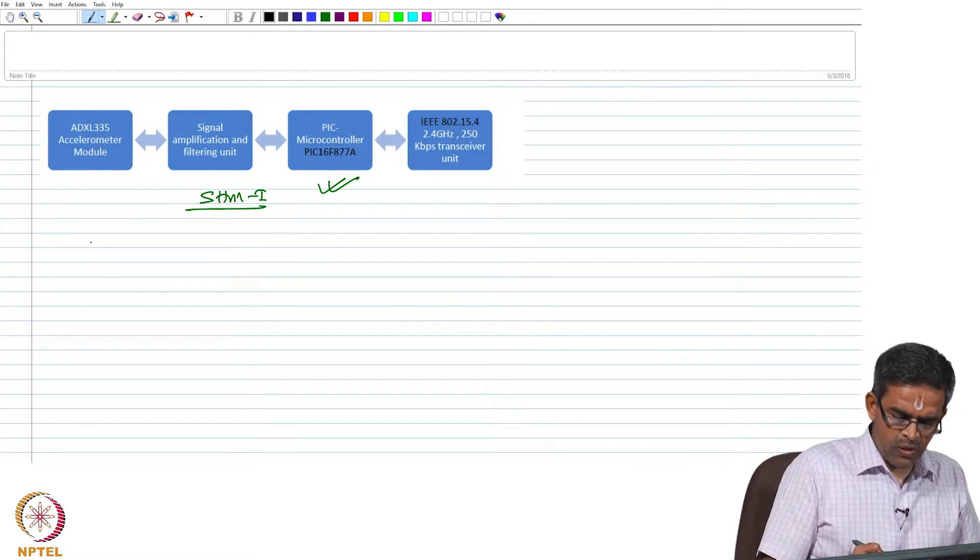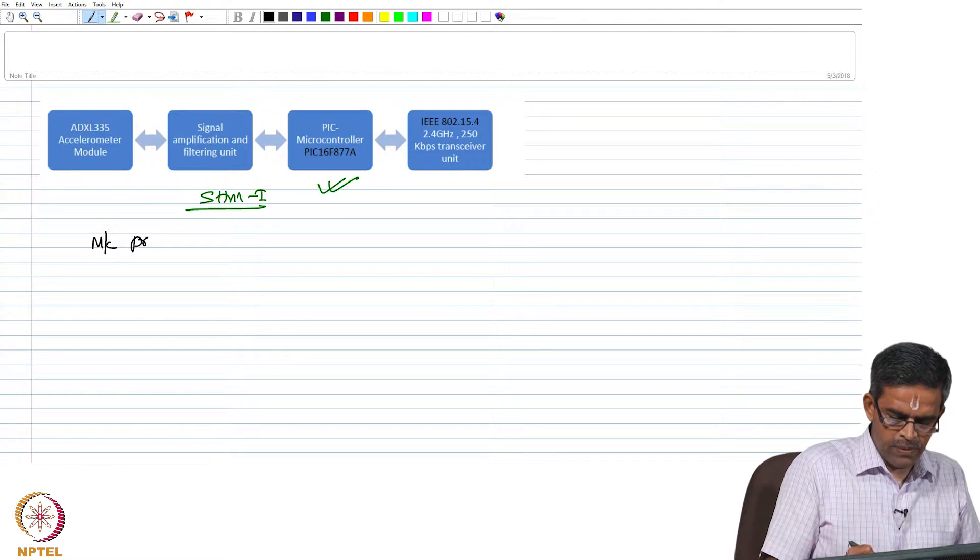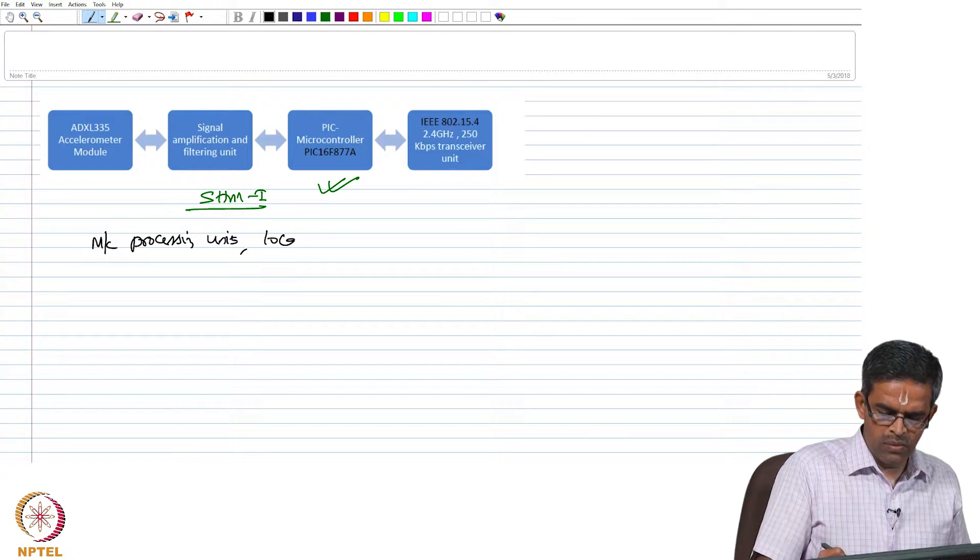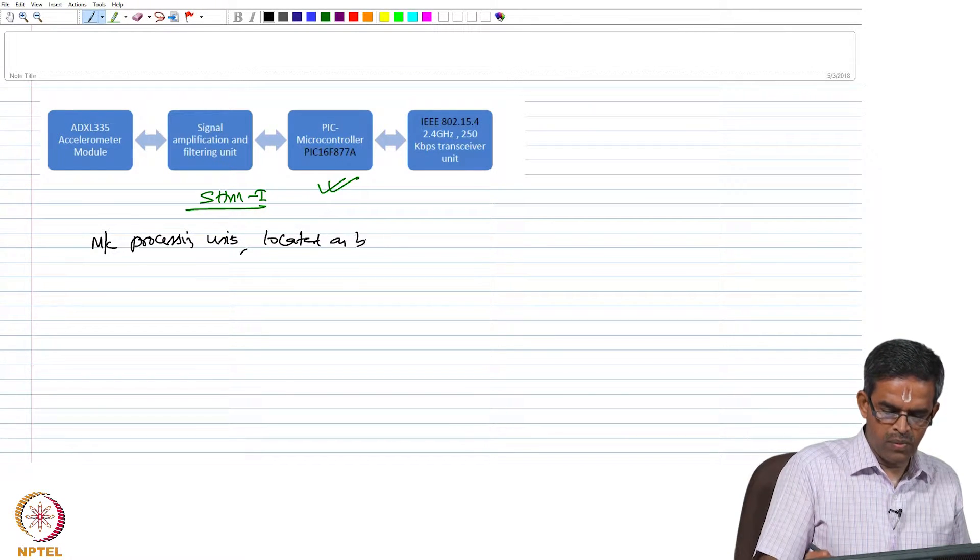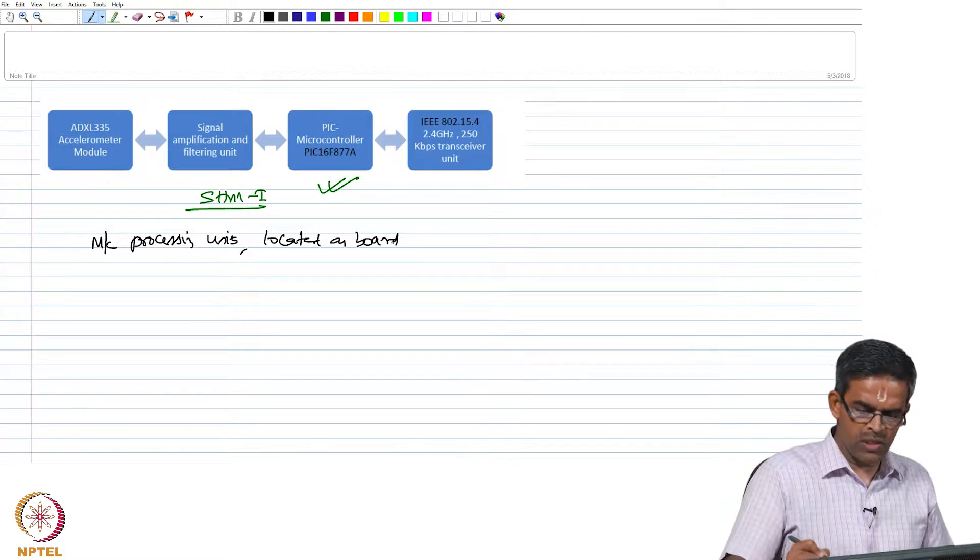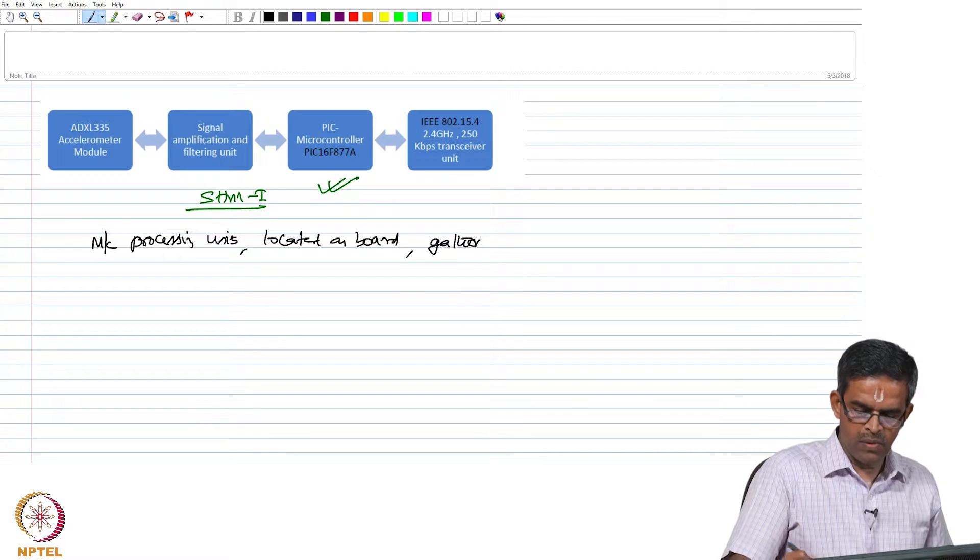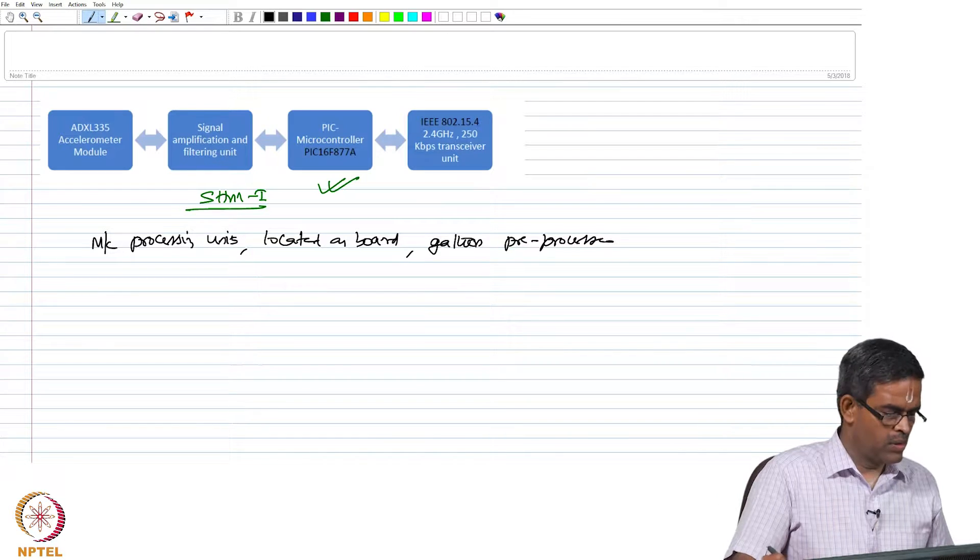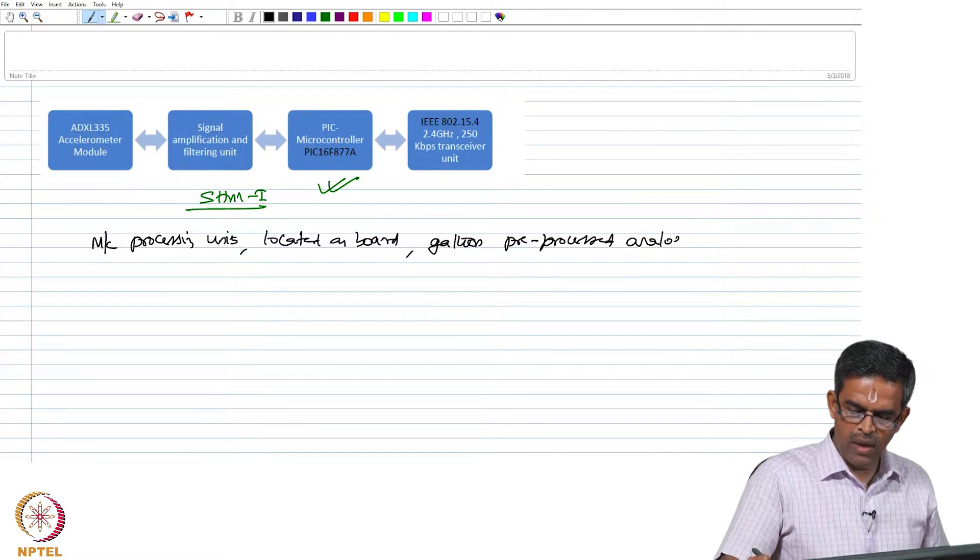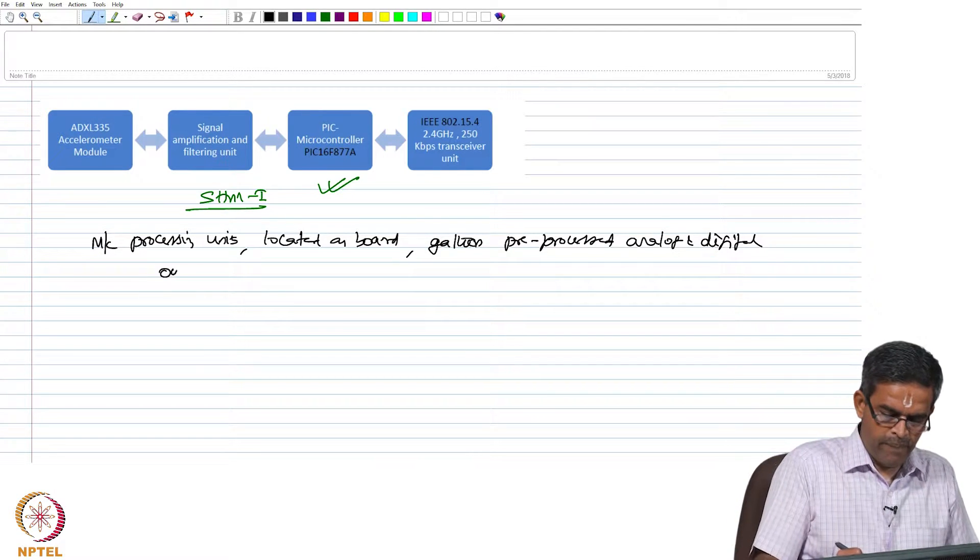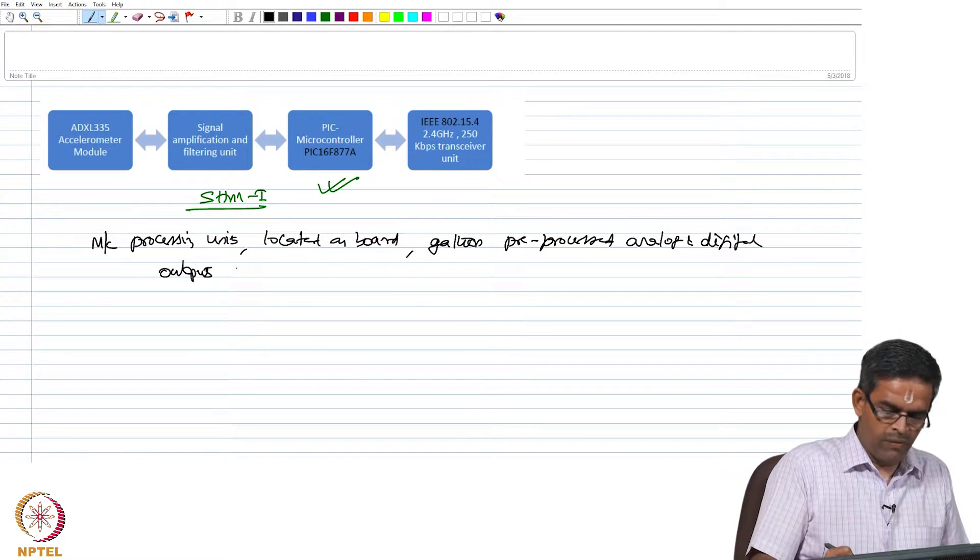The microprocessing units located on board gather preprocessed analog and digital outputs from the sensor.